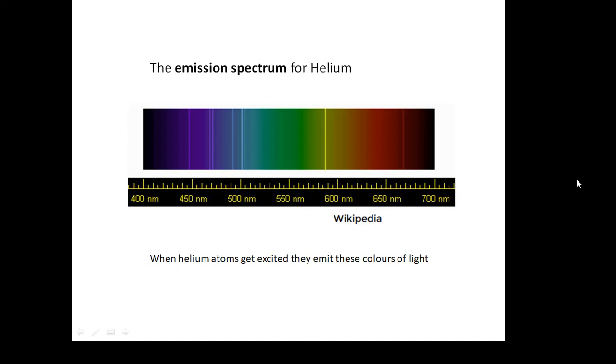If we can measure the wavelength of the light given off by something, we can actually work out what elements it contains. It's a bit like a barcode. Each element has its own barcode. And when helium atoms get excited, this is the barcode for helium, its emission spectrum.